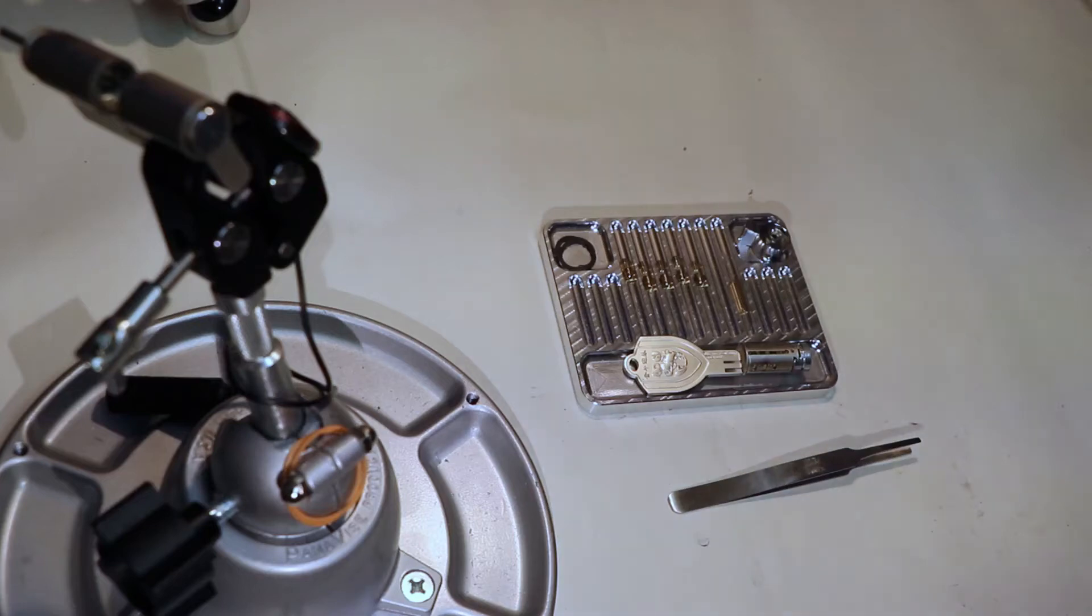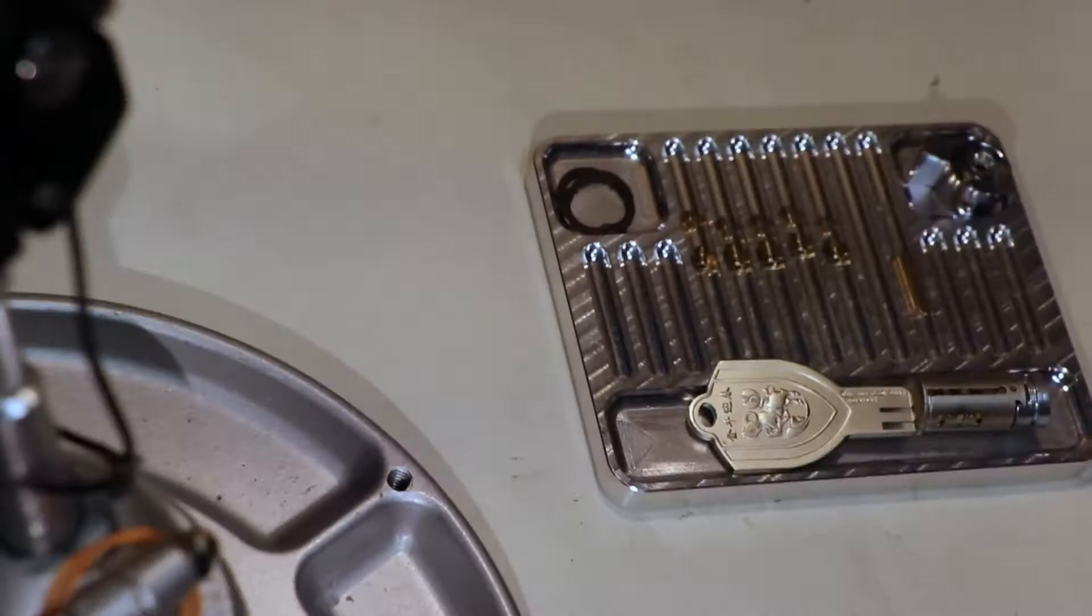Okay, so this is a follow-up to the Super C-grade lock that I found that I only had to pick the pins and not the sliders. I thought it's because there's no sidebar in here, but it turns out there is a sidebar, but I'm not happy with what's going on here. I'll show you why the sliders didn't matter.